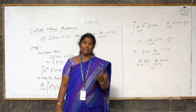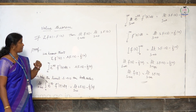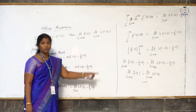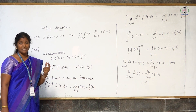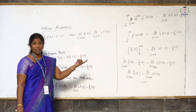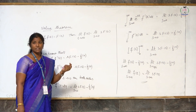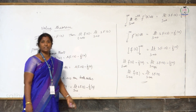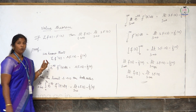Now let us see the final value theorem. The statement of the final value theorem is: if L of f(t) equals F(s), then limit t tends to infinity of f(t) is equal to limit s tends to 0 of s·F(s). That is, the final value of f(t) at t equals infinity is equal to limit s tends to 0 of s·F(s), where F(s) is known. Now let us see how to prove this.